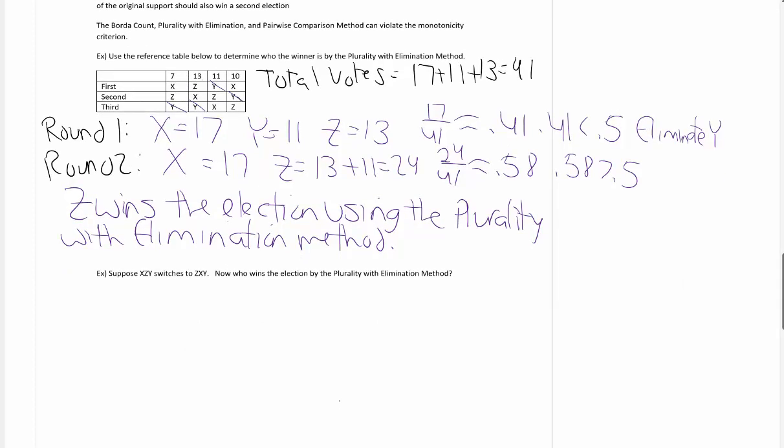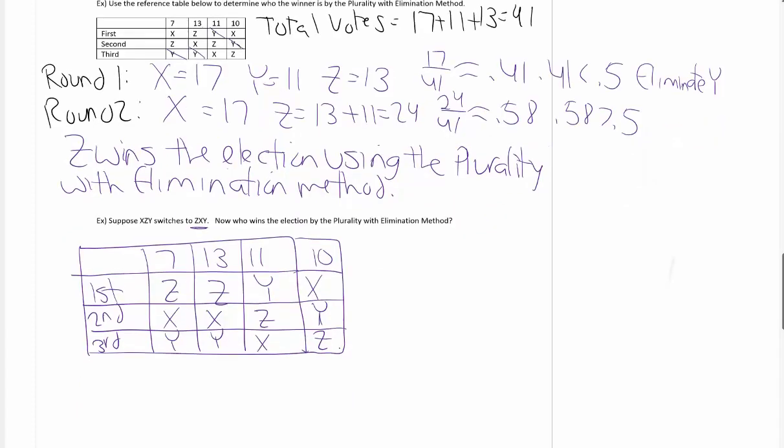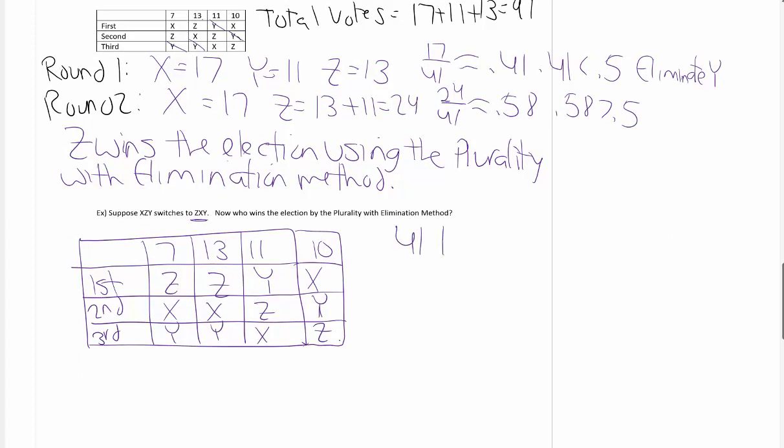Now, suppose the ballots that contained X, then Z, then Y switches to Z, X, Y. Who wins the election with the plurality with elimination method? We know Z won, and we know Z is going to get more help and more support. Let me draw this new preference table now. Notice the column that contains the 7 I changed from X, Z, Y to Z, X, Y. We know we have 41 total votes. Let's go to round one again.